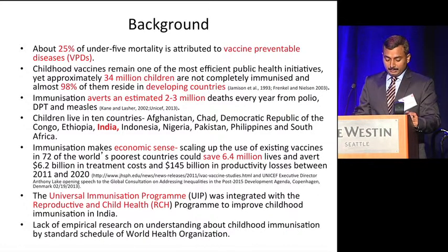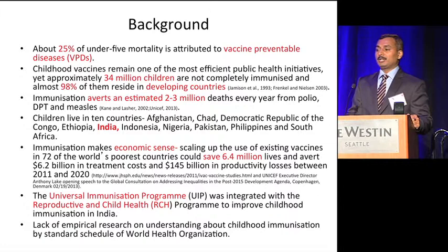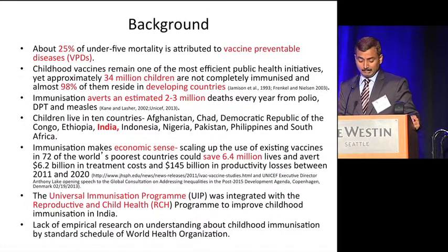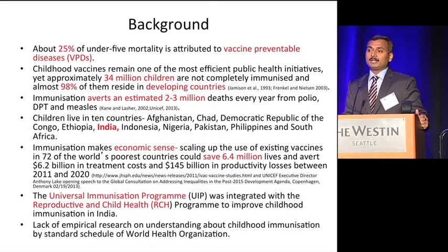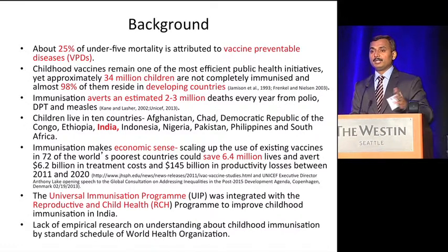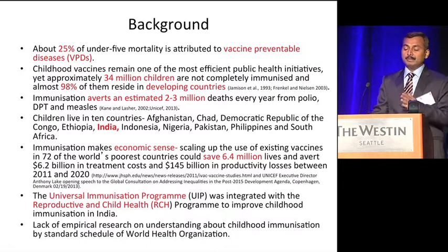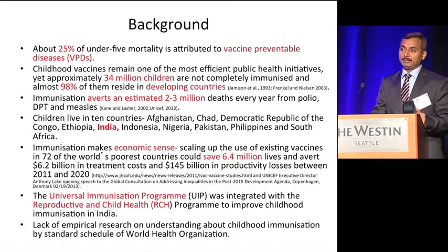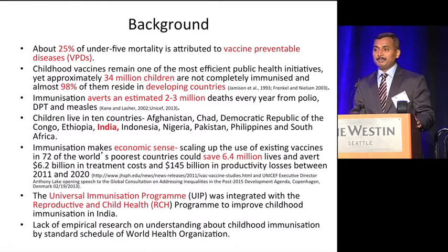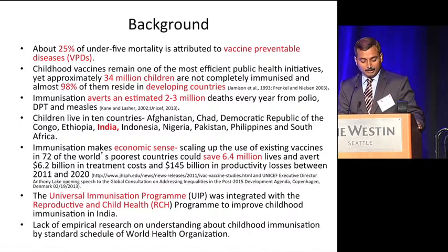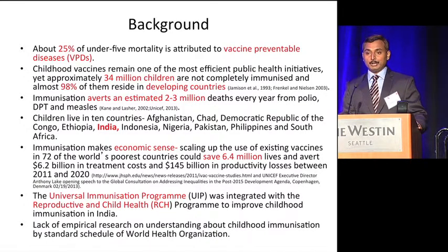Immunization also makes economic sense: scaling up existing vaccines in 72 of the world's poorest countries could save 6.4 million lives and avoid $6.2 billion in treatment costs and $145 billion in productivity losses between 2011 and 2020. In India, the universal immunization program was integrated with the reproductive child health program to improve childhood immunization, but there is still debate about how to improve immunization levels.